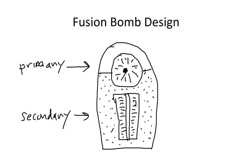How does all this work? The fusion design works by exploding the fission primary first. When the fission bomb starts to detonate, it gives off x-rays. Those x-rays go through the entire bomb casing and heat the interior of the bomb, causing the polystyrene foam to turn to a plasma. When that happens, a tremendous amount of pressure is exerted inward against the lithium-deuteride fuel and the plutonium spark plug, and the lithium-deuteride is squeezed to about 30 times its normal density.